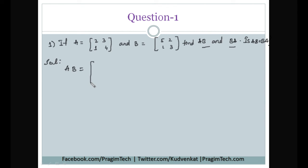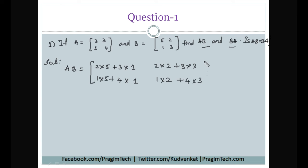AB is computed as follows: first row, first column gives 2×5 + 3×1 = 13; first row, second column gives 2×2 + 3×3 = 13; second row, first column gives 1×5 + 4×1 = 9; second row, second column gives 1×2 + 4×3 = 14. So AB = [13, 13; 9, 14].